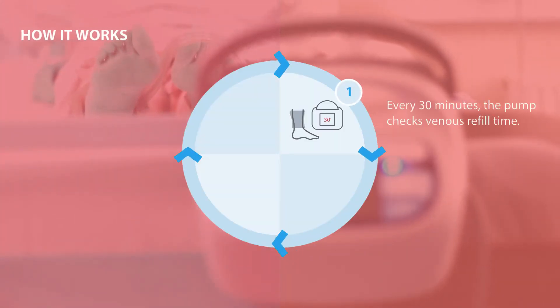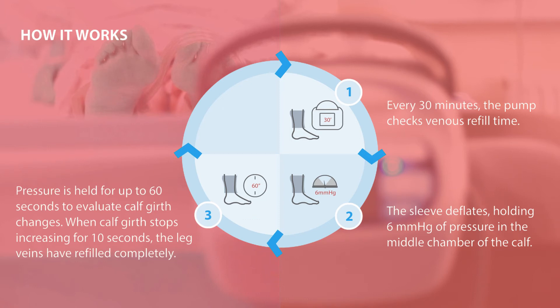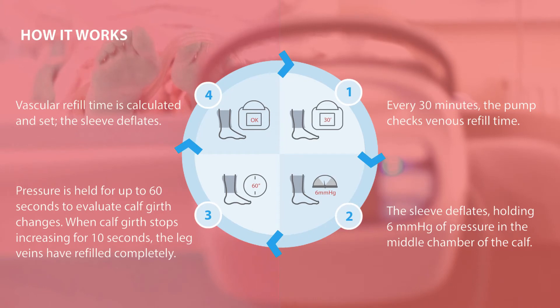Every 30 minutes, the pump checks venous refill time. The sleeve deflates, holding 6 mm of mercury pressure in the middle chamber of the calf. Pressure is held for up to 60 seconds to evaluate calf girth changes. When calf girth stops increasing for 10 seconds, the leg veins have refilled completely. Vascular refill time is calculated and set. The sleeve deflates.